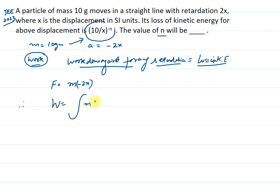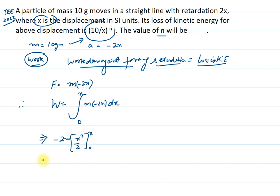Work done is basically the integral of that force, that is m(-2x), as displacement is from 0 to x. The body is moving in a straight line and x is the displacement, so the limits are from 0 to x. Solving this, -2 and m are constants, so we integrate x to get x² upon 2, with limits from 0 to x. This gives us -mx² as the work done against the force of retardation.